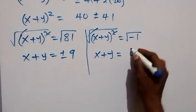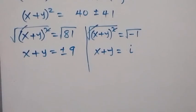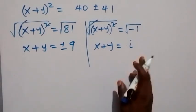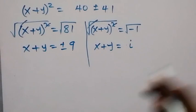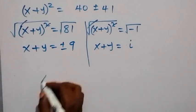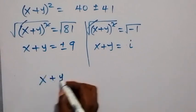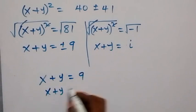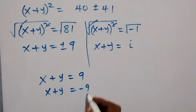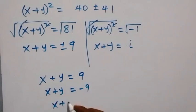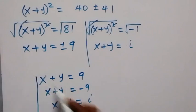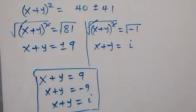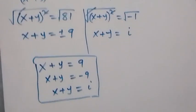The second case: x plus y all squared equals 40 minus 41 equals minus 1. The square root of minus 1 is i, which gives a complex solution. Therefore the solutions are: x plus y equals 9, or x plus y equals minus 9, or x plus y equals i.